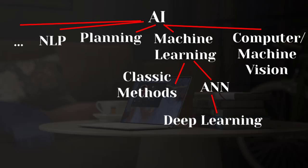In the machine learning area we can divide all the algorithms and methods into two major sub-categories. The first one is artificial neural networks, or ANN. The other category includes all the algorithms and methods which are not neural networks — for example, SVMs and all the classical methods can be placed in this category.